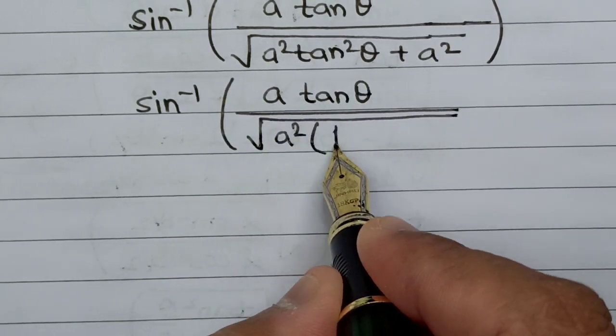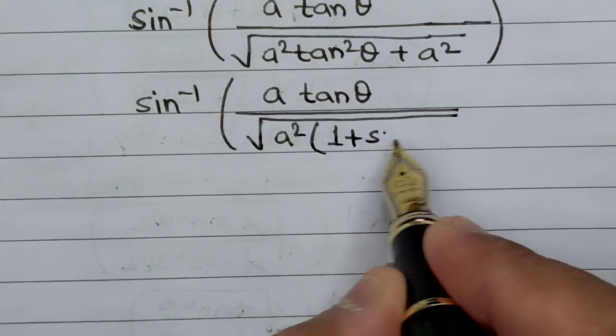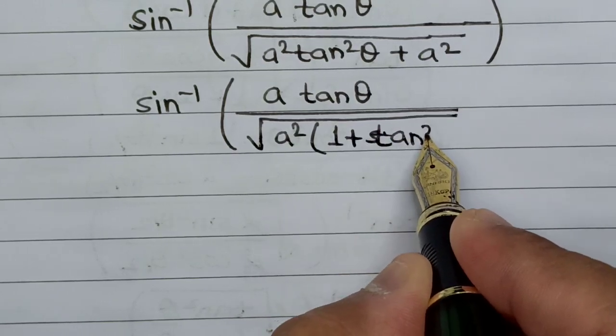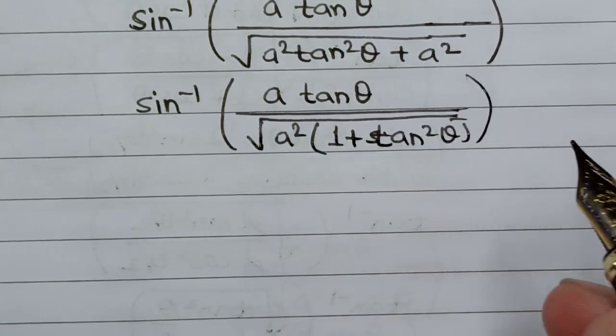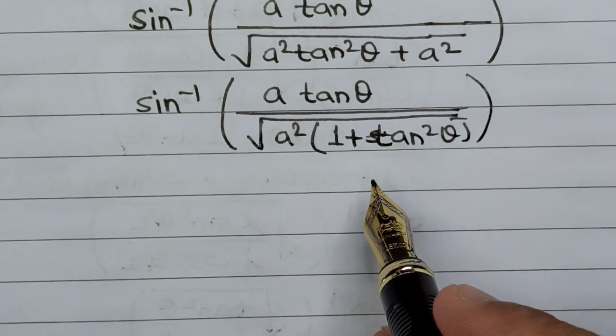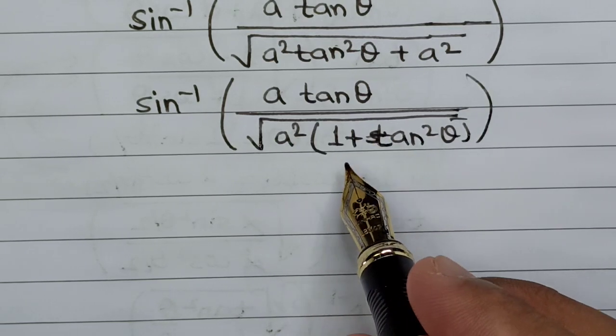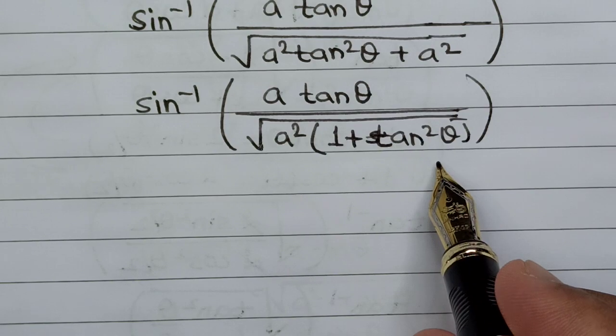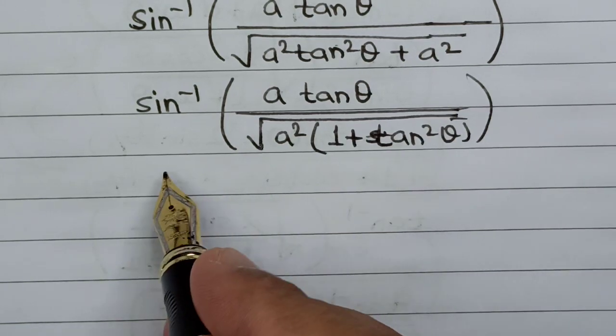Let us take the value of a squared common, so this will be 1 plus tan squared theta. We know there is a standard identity in trigonometry where 1 plus tan squared theta is sec squared theta.